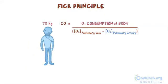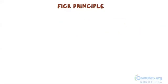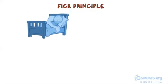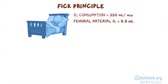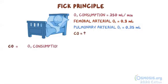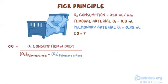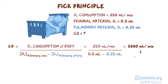For an average 70 kg person, total body oxygen consumption is around 250 mL per minute at rest. Let's work through the problem and calculate the cardiac output for a man lying in bed. This person has an oxygen consumption of 250 mL per minute, a femoral arterial oxygen content of 0.3 mL, and a pulmonary arterial oxygen content of 0.25 mL. Plugging into the formula: cardiac output equals 250 mL per minute divided by (0.3 mL minus 0.25 mL), which equals 5,000 mL per minute, or 5 liters per minute.